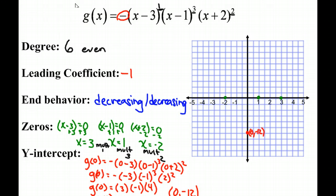Then we have to decide what's happening. We know that the end behavior is decreasing on both sides, so it will be decreasing here and decreasing here. We have to decide what's happening at the points on the x-axis, and the multiplicity of those values tells us that.